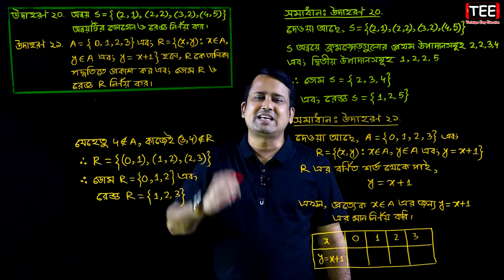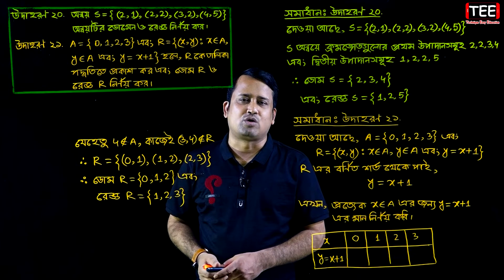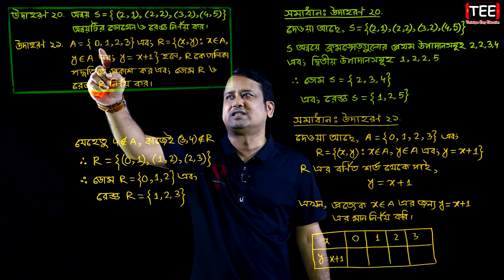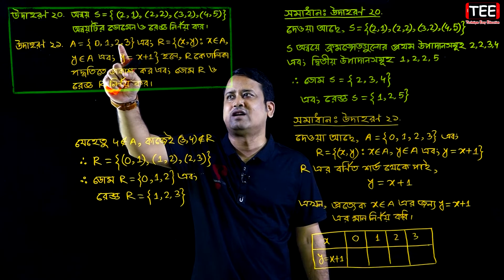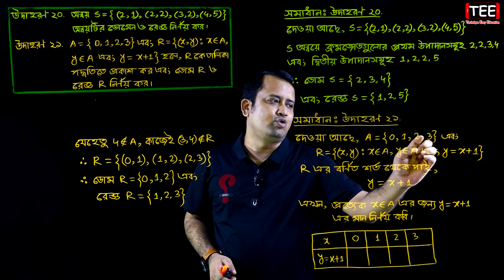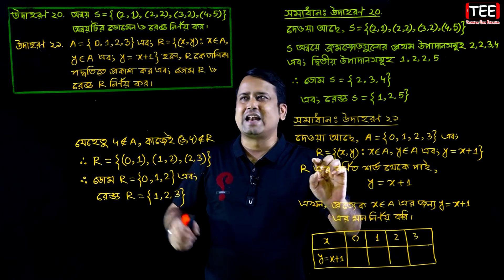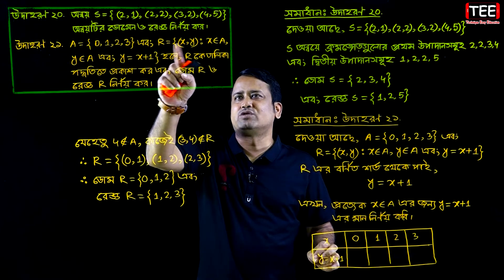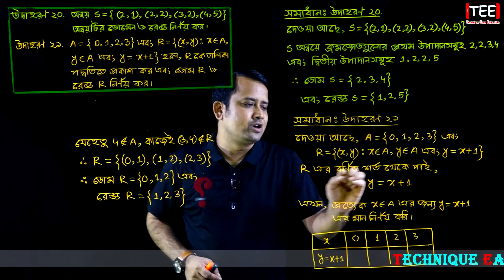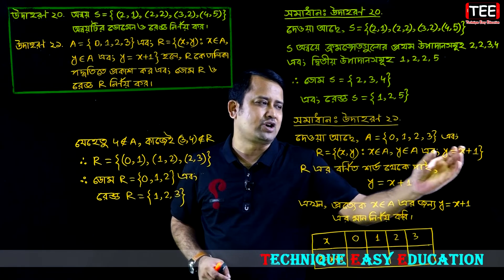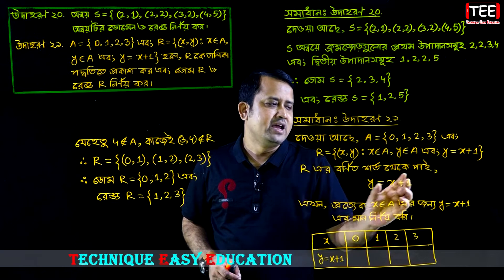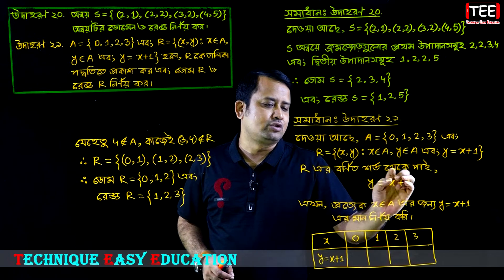E bong y equal to x plus 1. E bong bola se R-ke talika podjotit e prokas koro. E bong a equal to 0, 1, 2, 3. E bong r equal to z. Y equal to x plus 1.